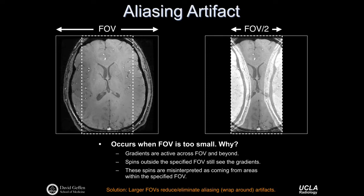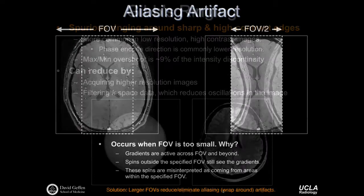The simple solution is to use a large field of view to reduce or eliminate the aliasing or wraparound artifact. However, increasing the field of view will cost some imaging time if you want to maintain spatial resolution. As always, there are trade-offs in MR.